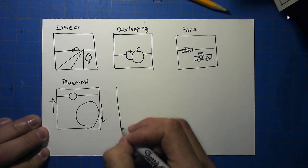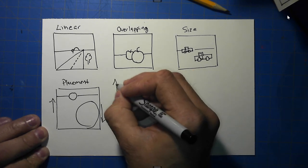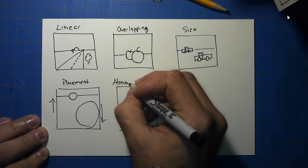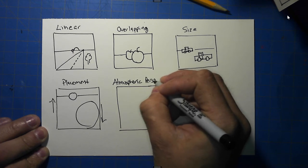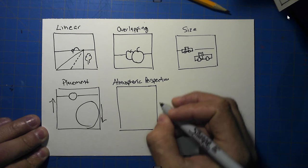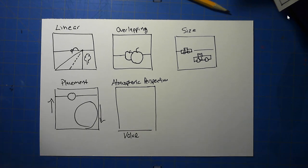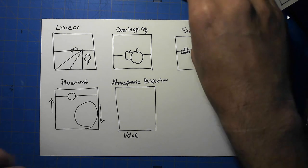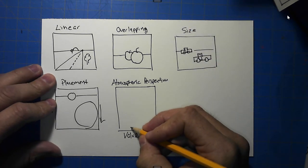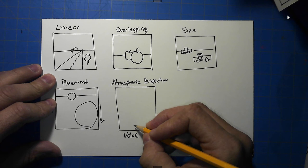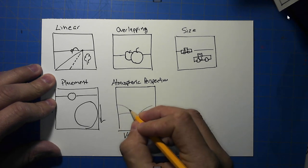The next one I like to do with pencil because the marker is not very good — I call it atmospheric perspective. It could also be called value perspective. This is used for making shadows and is typical for landscapes. As things go into the distance, they tend to get lighter.